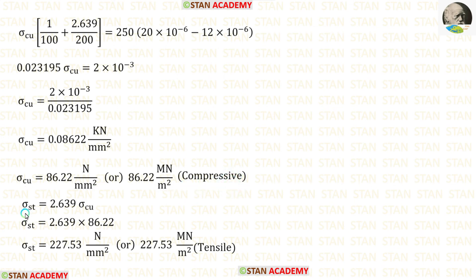We know that sigma ST is equal to 2.639 sigma Cu. Let us multiply sigma Cu with 2.639 so that we will get sigma ST which is tensile.